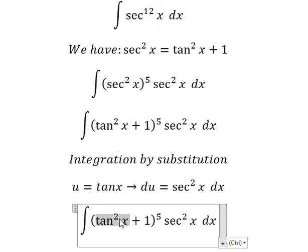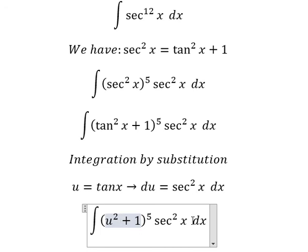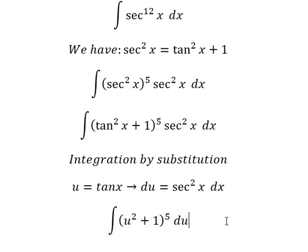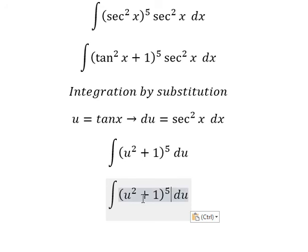We have u² here, and this sec²x we change by du, giving us ∫(u² + 1)^5 du. Now we need to expand this one.